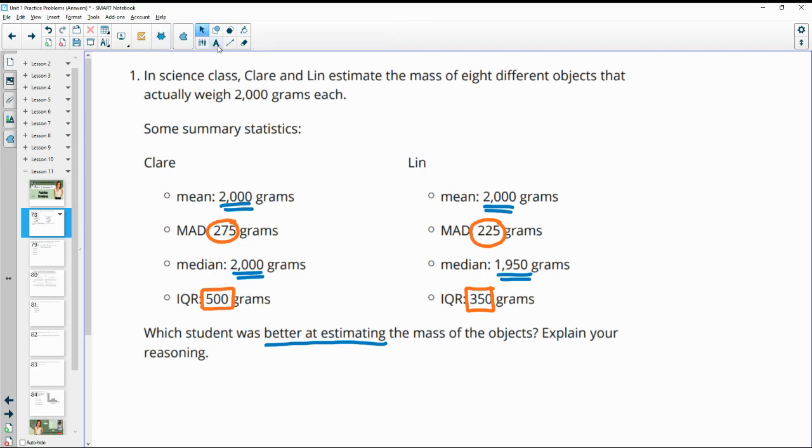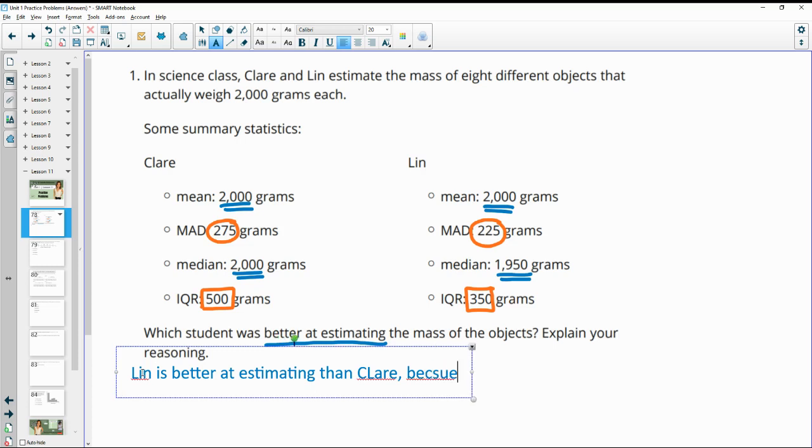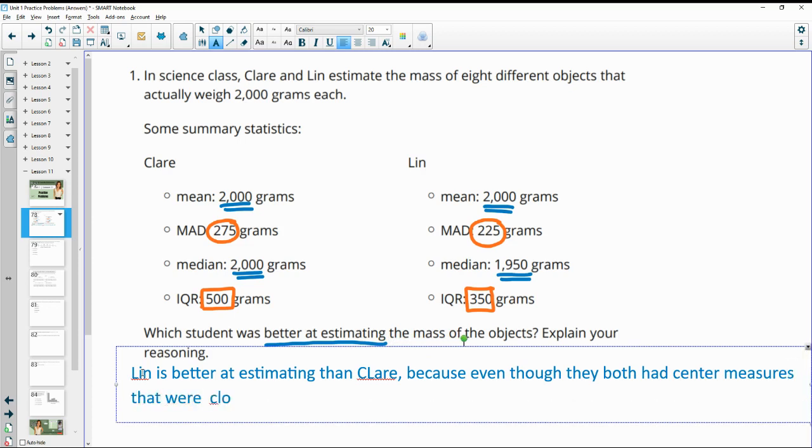So I personally would say that Lynn is better at estimating than Claire. Because even though they both had measures of center that were close to 2,000, Lynn's data had less variability. Lynn's guesses or estimates had less variation or less variability.